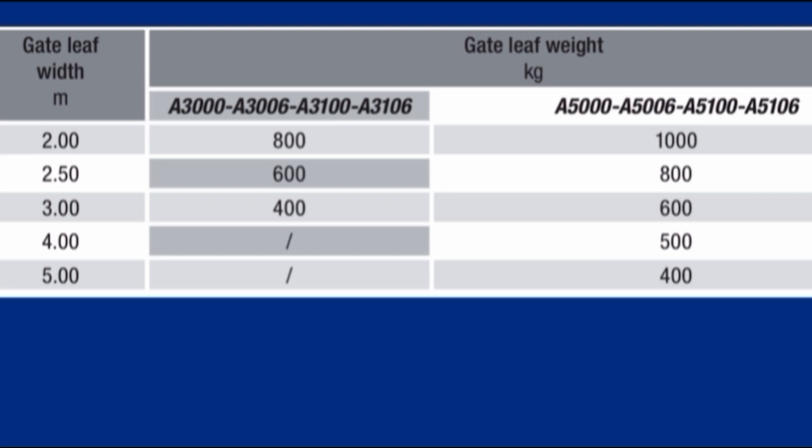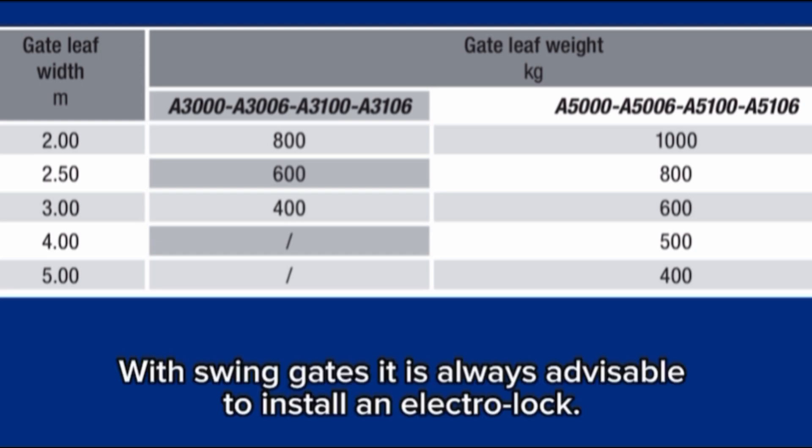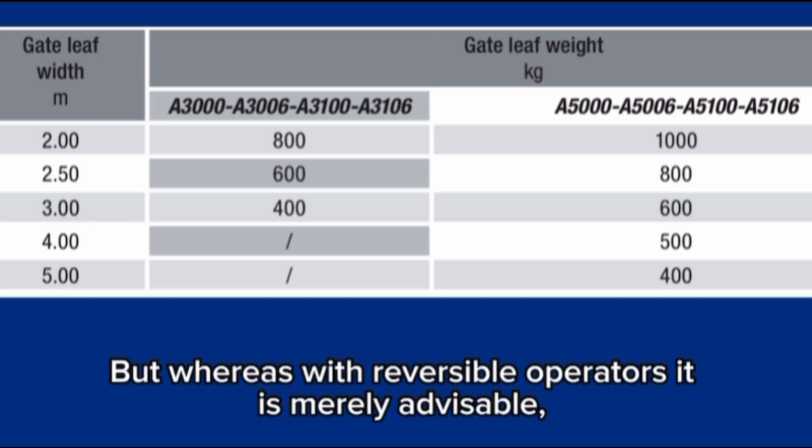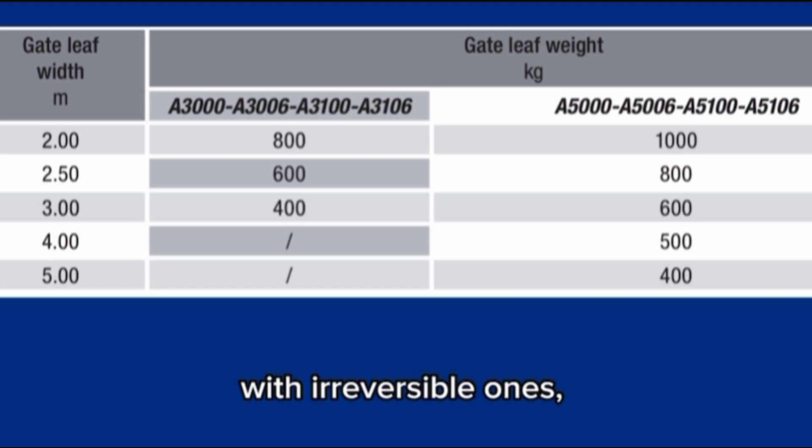Restrictions. With swing gates, it is always advisable to install an electro lock. This is to ensure a reliable closing and to protect the gear motor's inner workings. But whereas with reversible operators it is merely advisable, with irreversible ones, beyond 4 meters, it is obligatory.